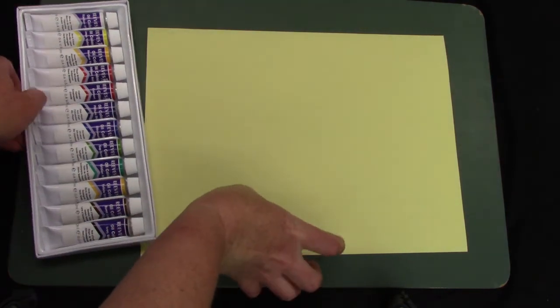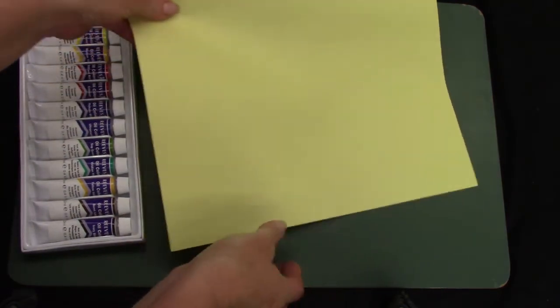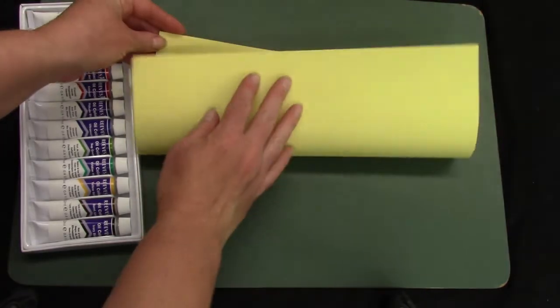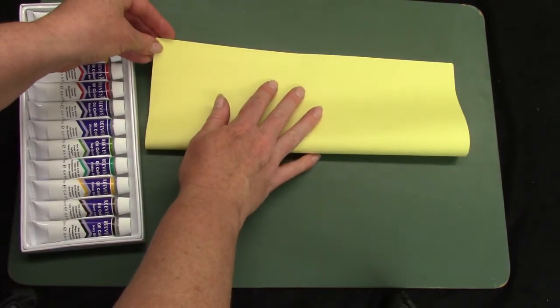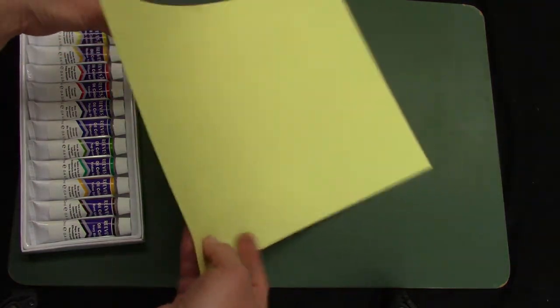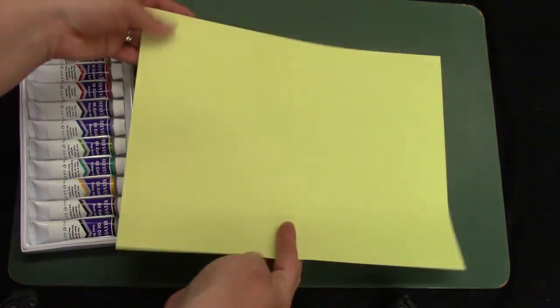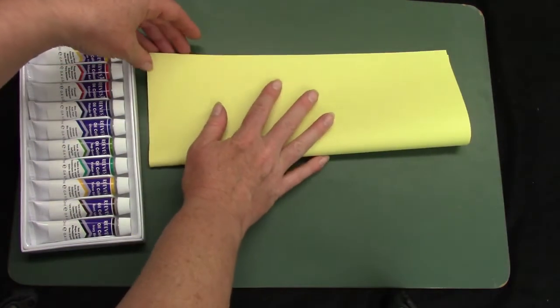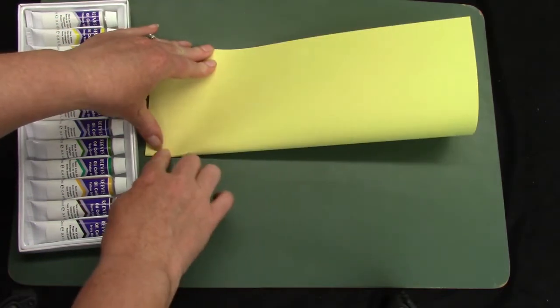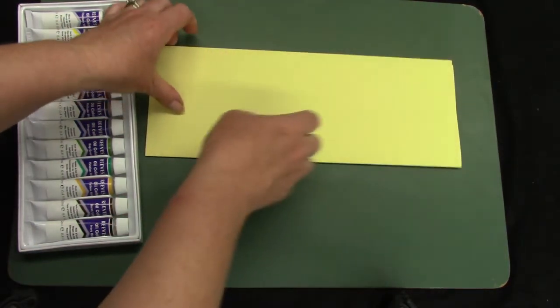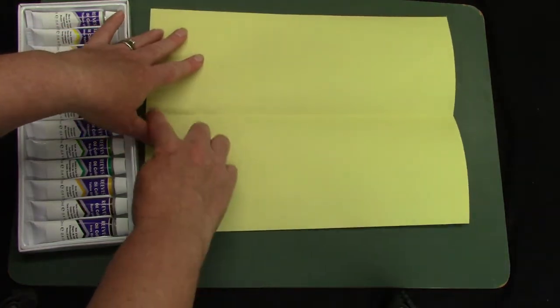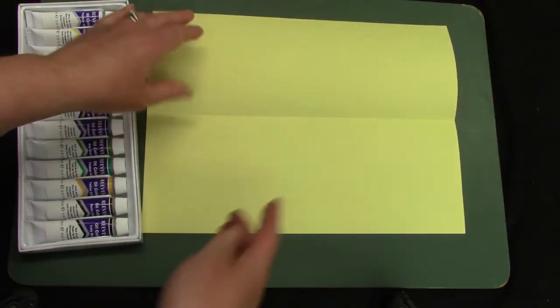So the first thing I would like for you to do is take your paper and fold it in half. You can fold it in half this way or the other way. I'm going to fold mine in half the long way here. I have folded it on a long horizontal line.